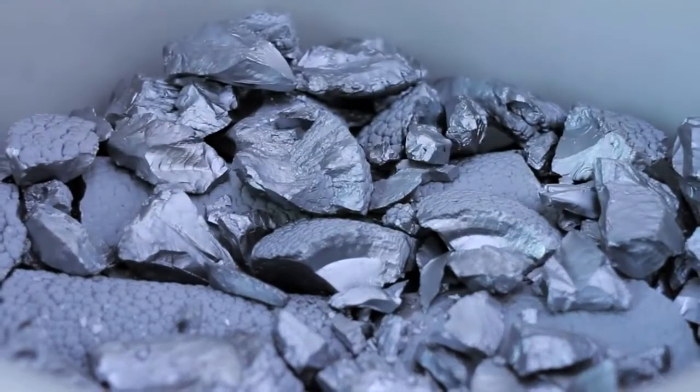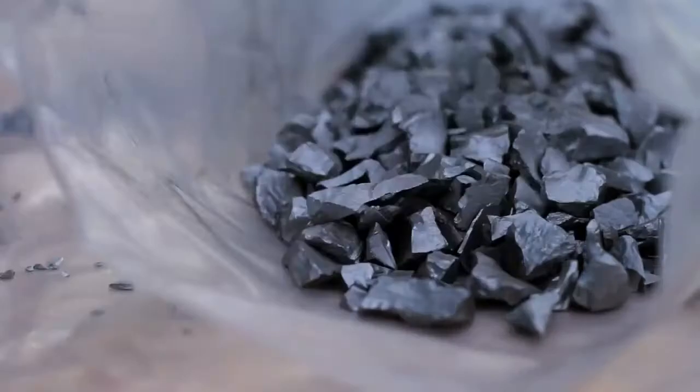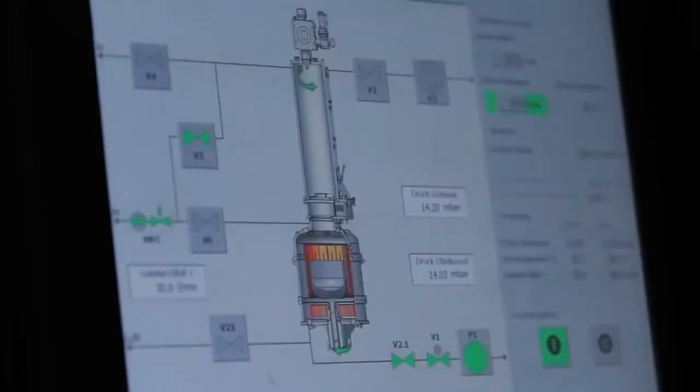As a first step, raw silicon is extracted from quartz sand. For use in the photovoltaics industry, the semi-metal must be 99.99% pure.